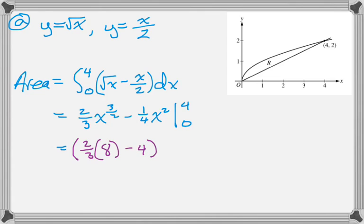Which 4 squared is 16, so a fourth of that is 4. Save some time by not even squaring it and just canceling the 4s. And then when I plug in 0, I get 0. So my answer is 16 thirds minus 12 thirds, which is 4 thirds.